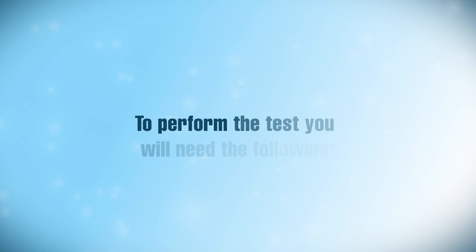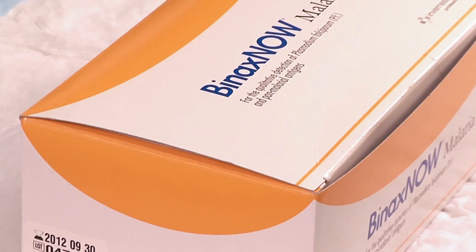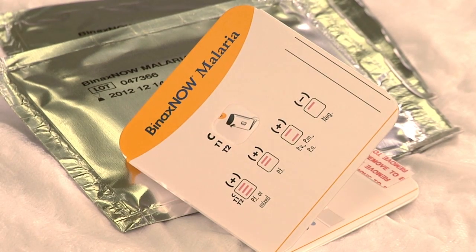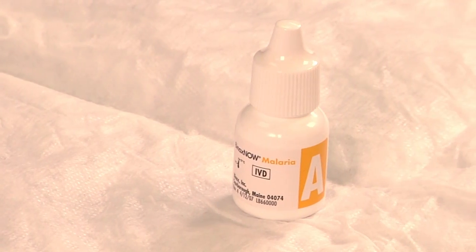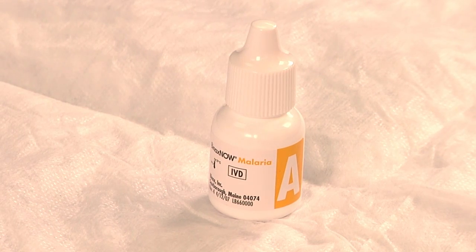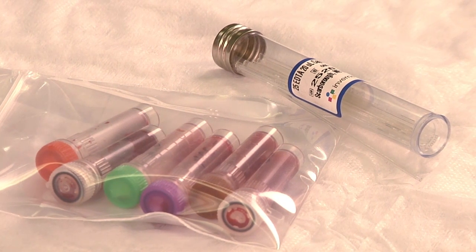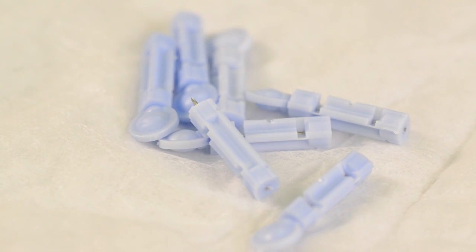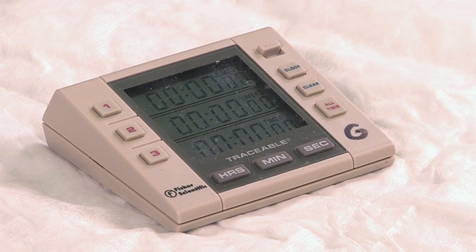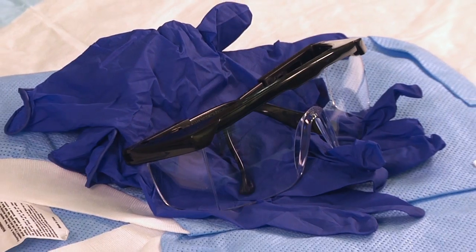To perform the test, you will need the following: the BinaxNOW malaria test kit, which contains the test device and reagent A — a TRIS buffer containing detergent and sodium azide; the blood sample collected by venipuncture in an EDTA tube or collected directly from the patient by a finger stick with a lancet and capillary tubes; a timer or stopwatch; a biohazard container; and personal protective equipment.